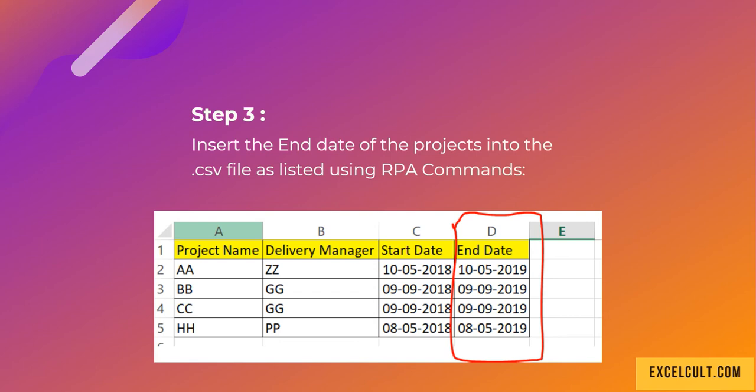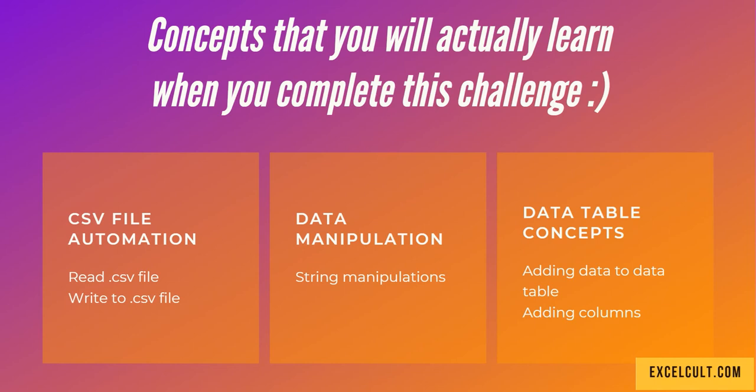Then as step three, insert an end date column to the existing CSV file and update the values as shown in the image. So here you will be able to create a new column in the existing file.